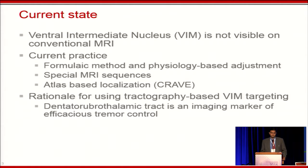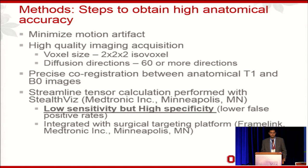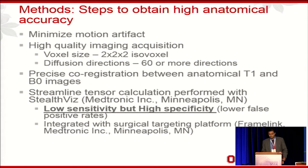Another important motivation for this work was to avoid side effects from off-target sonication, including sensory deficits and problems with sonication of the pyramidal tract. To obtain high anatomical accuracy of the diffusion-weighted imaging, we minimized motion artifact by padding the head well and ensuring patients with head tremor did not move during MR acquisition. We maintained a 2-millimeter isovoxel size, used at least 60 diffusion directions, manually checked co-registration between anatomical T1s and B0 diffusion-weighted imaging, and used the StealthWizt Medtronic software platform for its integration with surgical targeting software and high specificity suited for low false positive rates.